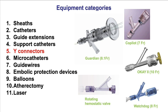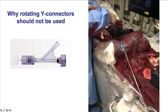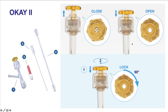The fifth category are the Y-connectors. There are the standard rotating hemostatic valves, used infrequently these days, whereas there are those with an automated hemostatic valve such as the Guardian, the Copilot, the OK2, and the Watchdog. Using a non-rotating hemostatic valve is important to minimize blood loss, which can often be substantial. This is an example of the OK2, which has a hemostatic valve and as a result minimizes bleeding when there are catheter exchanges.